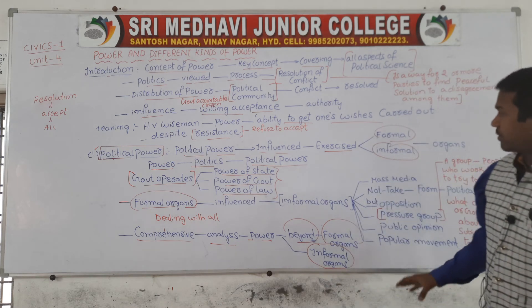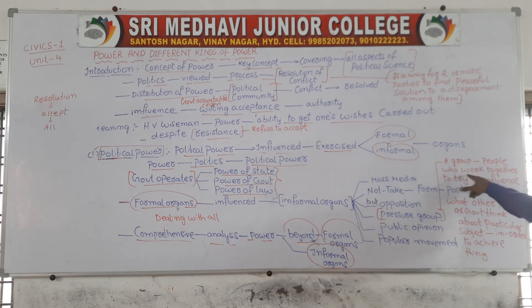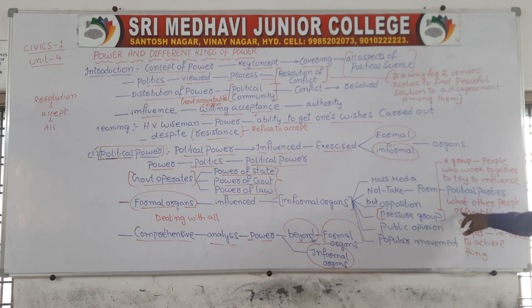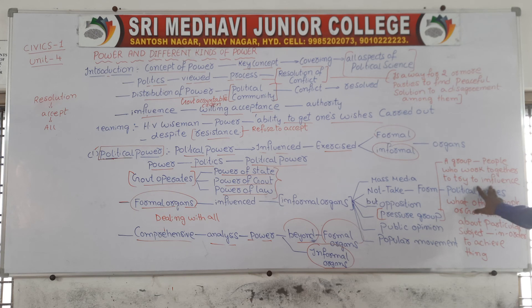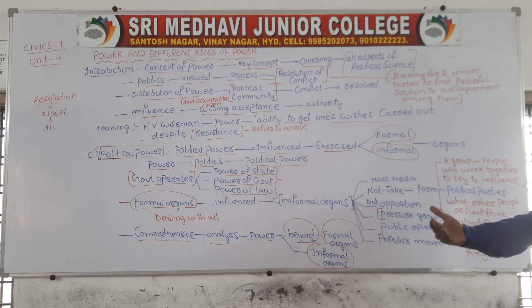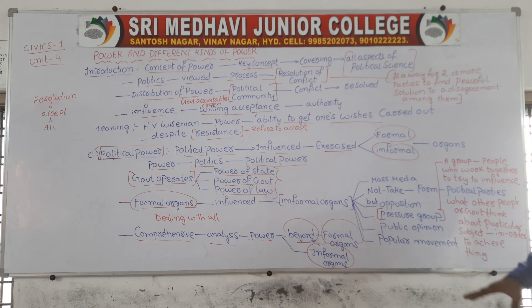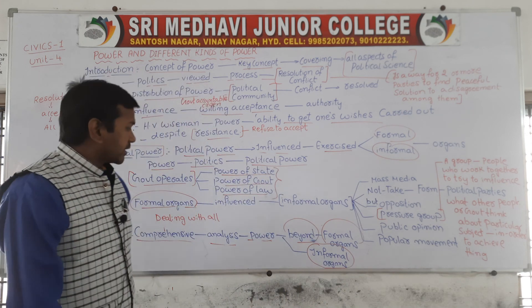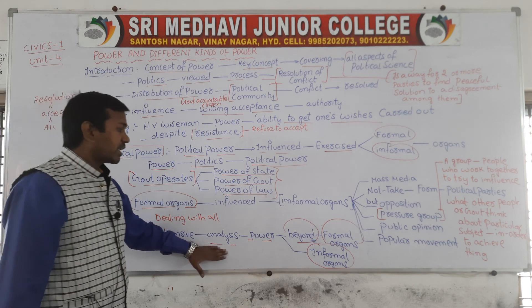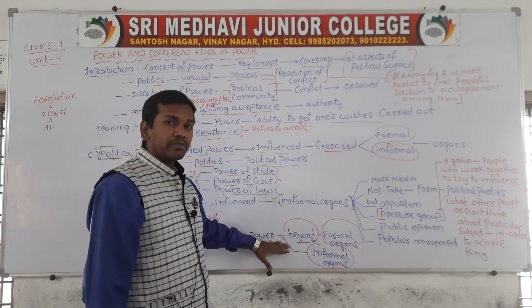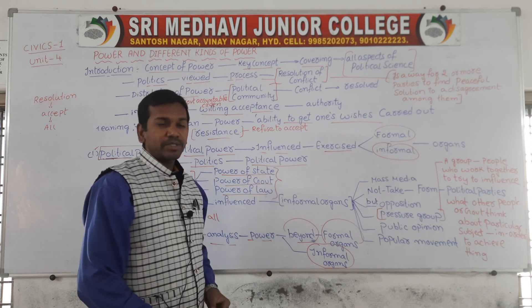Pressure groups are groups where people work together to influence what other people or government thinks about a particular subject. Some informal organs act as pressure groups, working together to influence the mind of other people as well as government about any particular subject so that they can achieve their goal. Comprehensive analysis of power covers formal as well as informal organs.